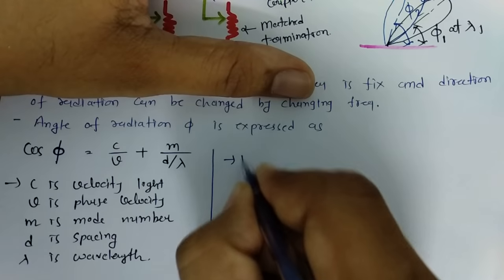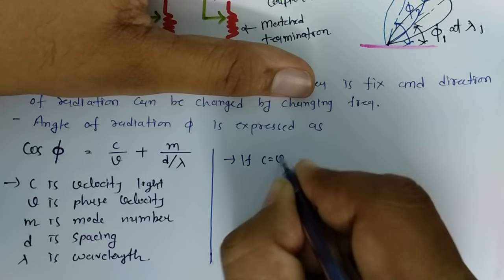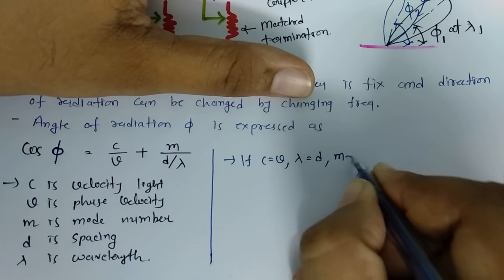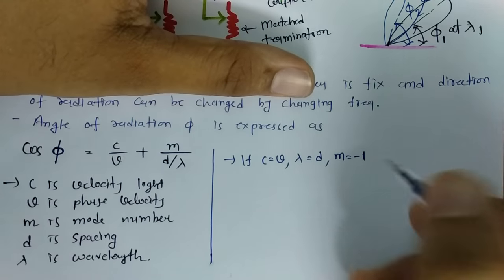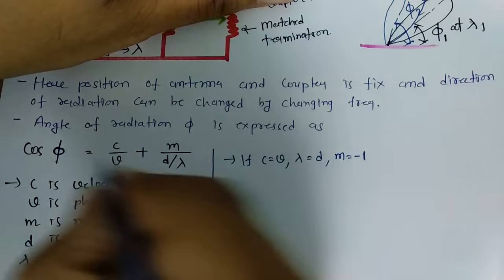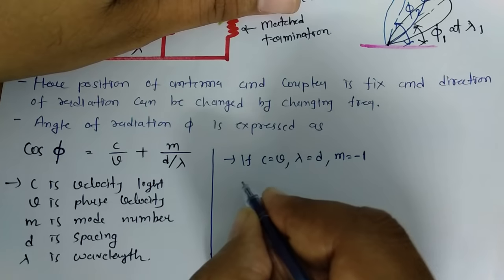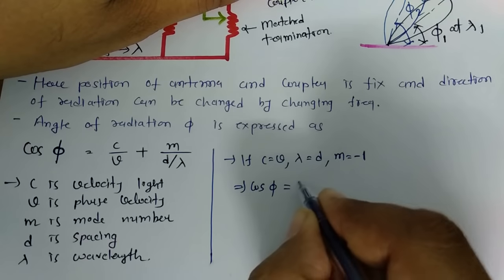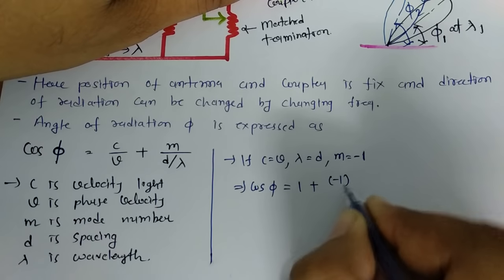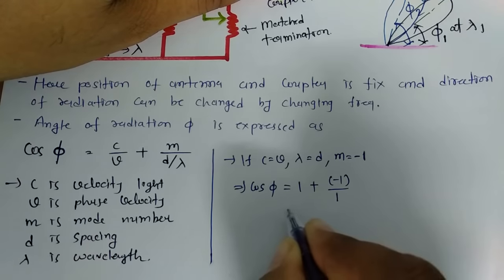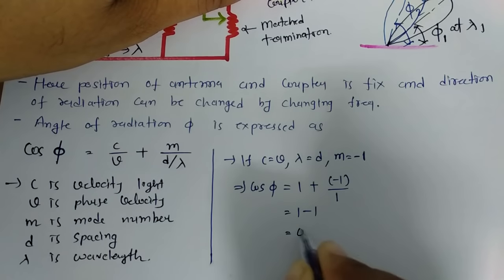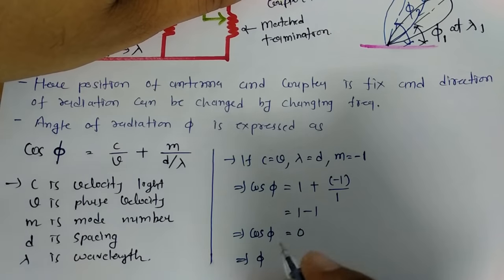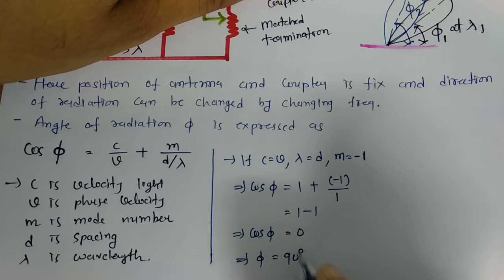If I consider C equals V, lambda equals D, and M equals minus 1, for this case, if I substitute those values in this formula, then cos(φ) will be 1 plus M equals minus 1 divided by D/λ, this will be 1. So 1 minus 1, that will be 0. cos(φ) equals 0 means phi equals 90 degrees.